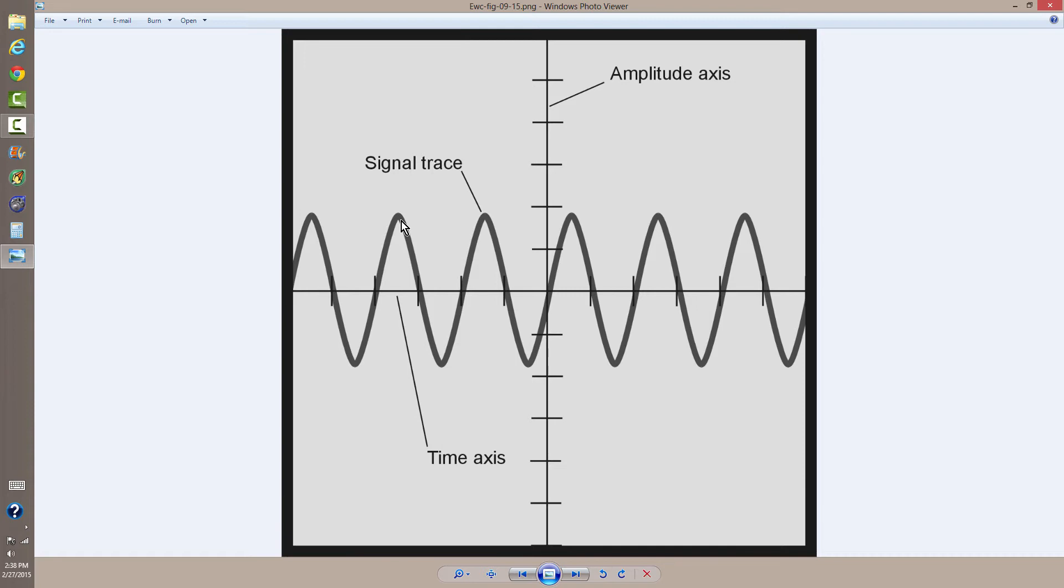In this case it's a sine wave such as you might get if you listen to a pure radio frequency unmodulated carrier signal. That's what you would see if you adjusted the parameters of the oscilloscope correctly. It is what they call a time domain display because the x-axis or horizontal axis portrays time.